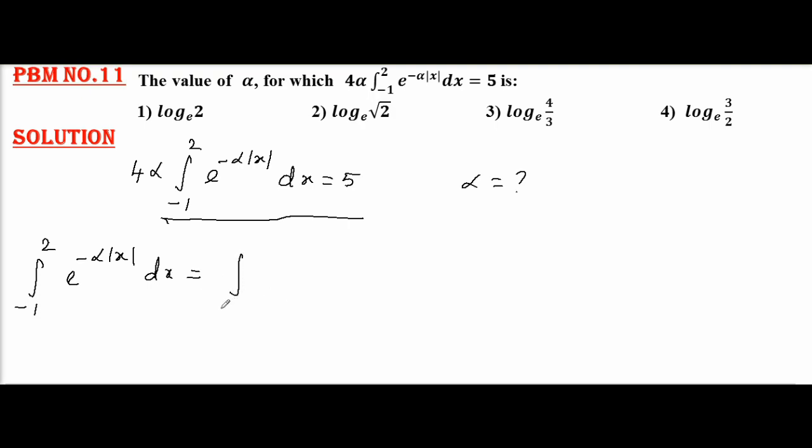Let me split this integral: from -1 to 0 of e^(-α|x|) dx plus integral 0 to 2 of e^(-α|x|) dx. Now, this is equal to integral -1 to 0, negative term mod x will be -x, so that gives me e^(αx) dx plus integral 0 to 2, positive mod x equals x, so it is e^(-αx) dx.